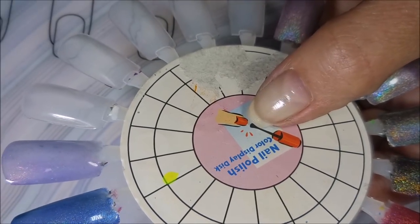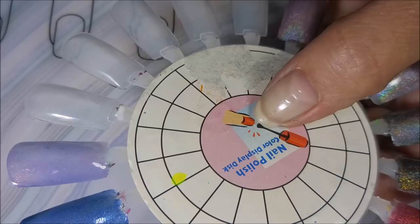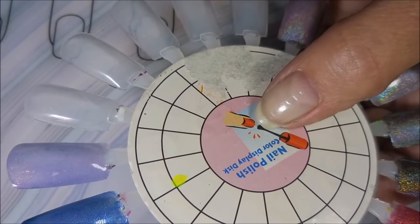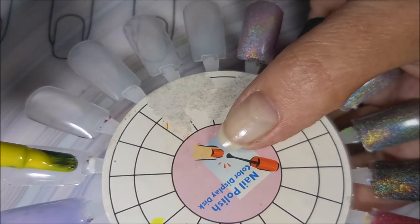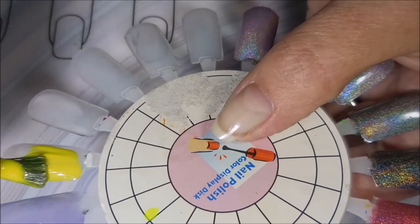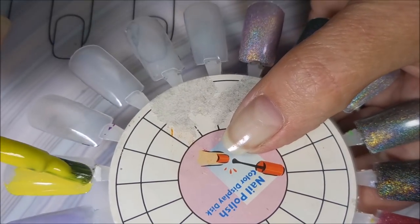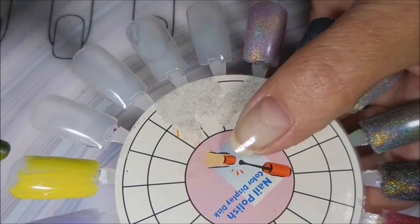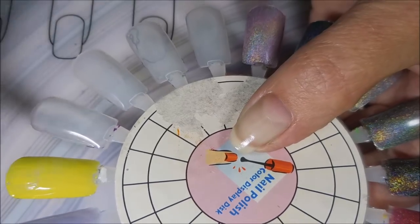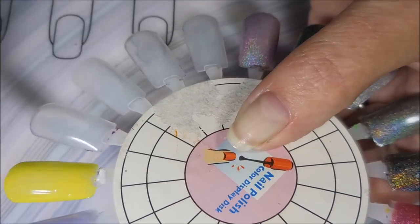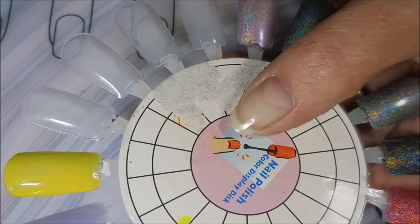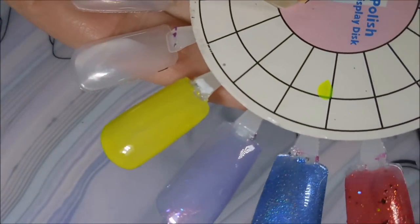And next we've got the yellow one which is I Lassoed the Sun. Oh yeah. That's got a real nice thick formula. Not too thick. Not like gloppy. But nice. Alright. Looking forward to a second coat of that one.